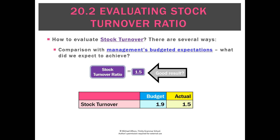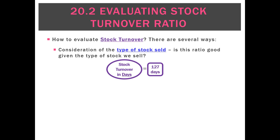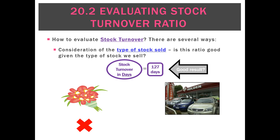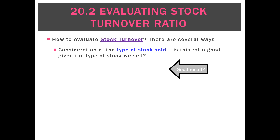Looking at the opposite: what if we budgeted for a turnover of 1.9 and only achieved a turnover of 1.5? We'd say that's a negative result — we didn't turn over our stock as much as we budgeted for at the beginning of the year. A lot of it will also depend on the type of stock we sell. For example if we've got a stock turnover of 127 days and we're a florist selling flowers, that's going to be terrible because the flowers will have gone rotten. But if it's a car yard, that would actually be pretty good — a car costs thousands of dollars so it obviously takes a while to sell each one.